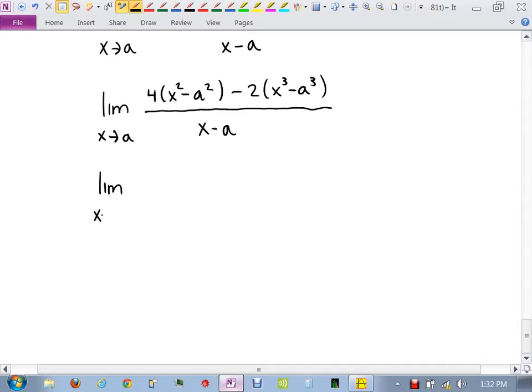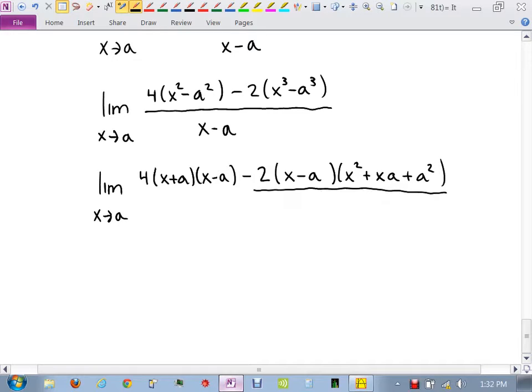So you agree with that? Any questions? Limit, x goes to a, 4 times difference of squares, x plus a, x minus a. Minus 2 times. What is the formula for difference of cubes? This will turn to x minus a, x squared plus x a plus a squared. So you need to somehow either know that or go find it somewhere. Are you all right with that? This is this. This is this.